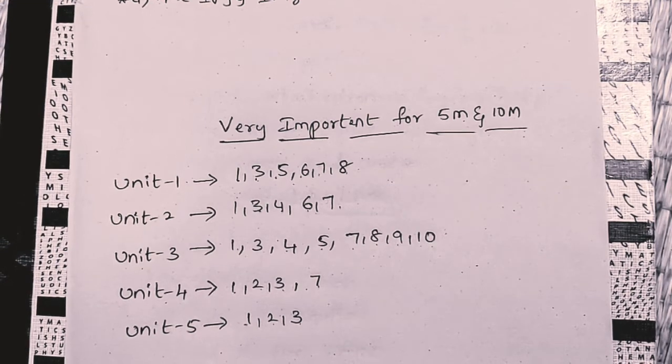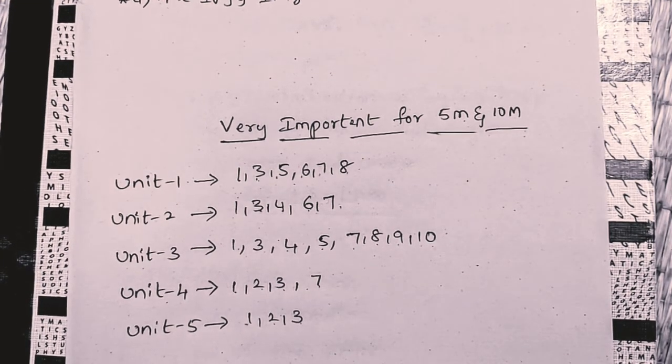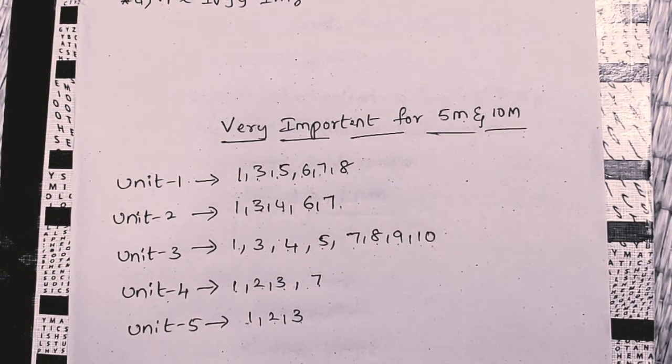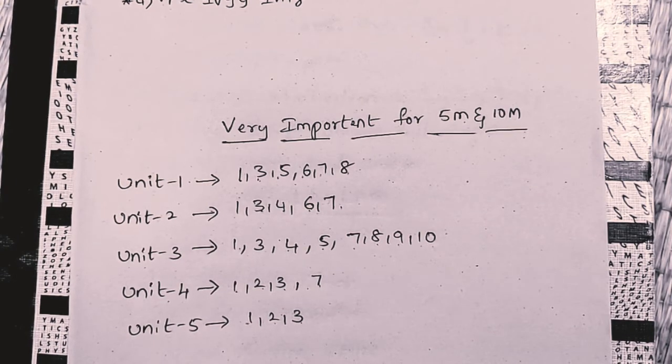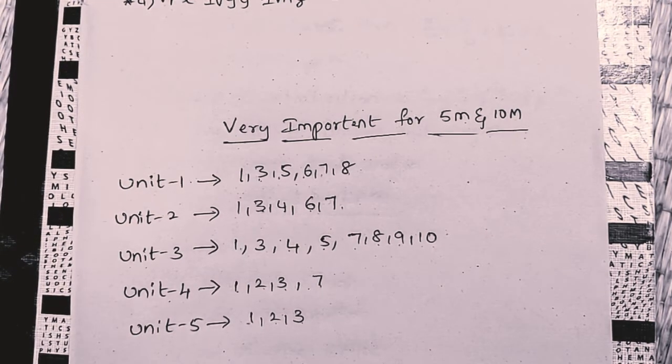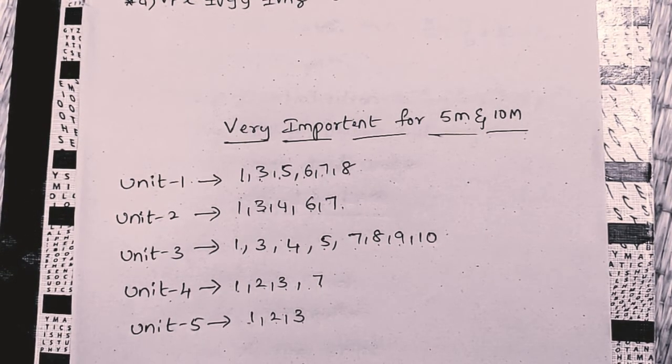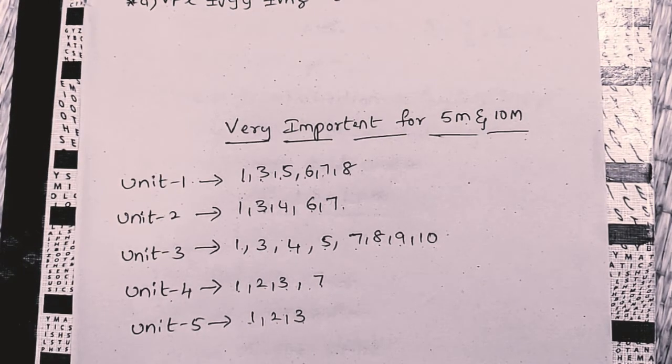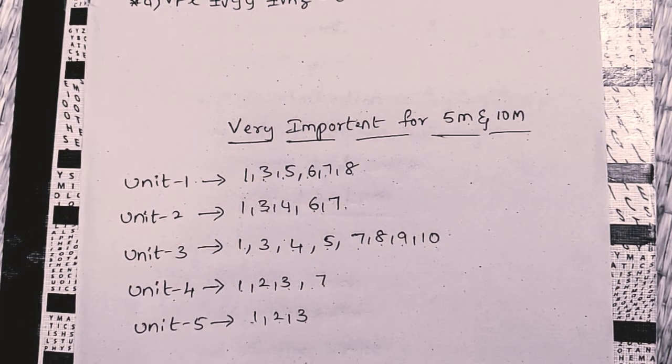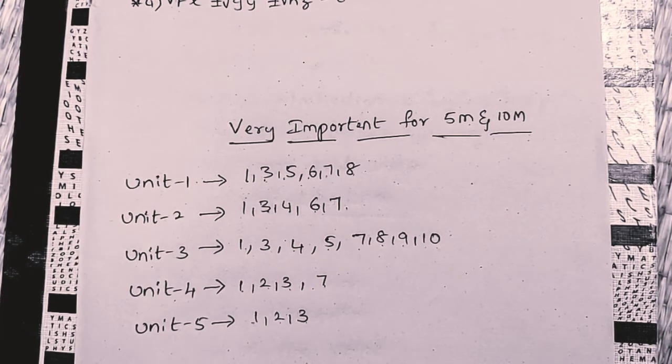Unit 1: question numbers 1, 3, 5, 6, 7, 8. Unit 2: question numbers 1, 3, 4, 6, 7, 8. And Unit 3 is 1, 3, 4, 5, 7, 8, 9, 10. Unit 4 is 1, 2, 3, 7. Unit 5 is 1, 2, 3.